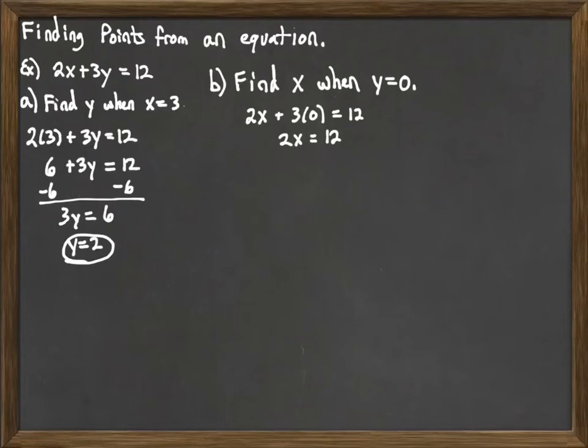And then we solve that equation for x by dividing both sides by 2. And that gives us our solution here, x equals 6. So now we have a second point. x is 6, y is 0. A second solution to the equation.